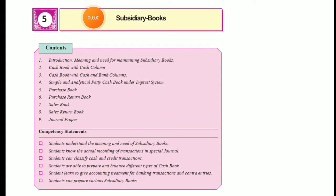Good morning students. Today we are on our fifth chapter, that is Subsidiary Books. As I told you earlier, the major book of accountancy process starts with the exchange of goods and services. When goods and services are exchanged for monetary value, that is known as a transaction. A transaction is formed when we exchange goods or services where buying and selling takes place and money is exchanged.